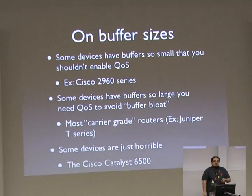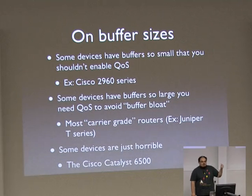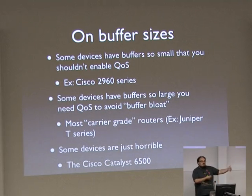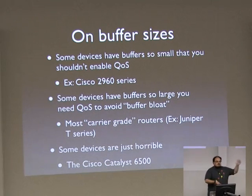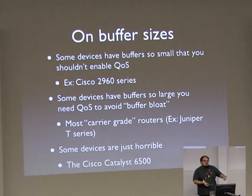This gets even worse when you consider that many people will buy their WAN from a third party. Most of us don't have enough money to just dig fibre in the ground wherever we want, and your carrier will not tell you down to this level of information. I happen to know broadly what platforms Telstra, Optus, Level 3 in the US generally use, but I certainly don't know how they're configured or how it affects me.